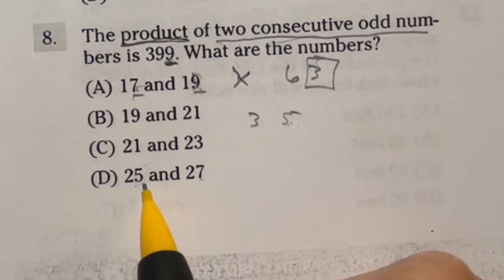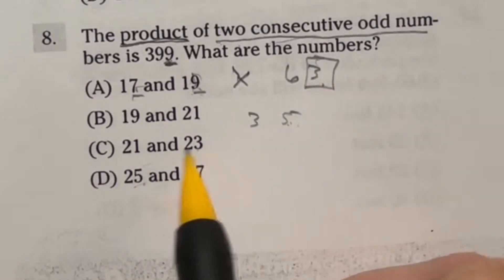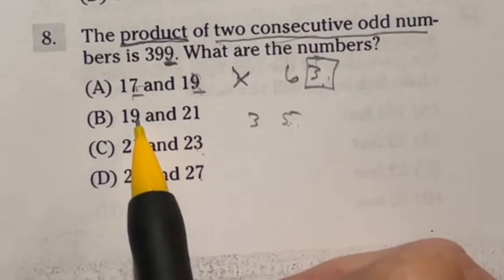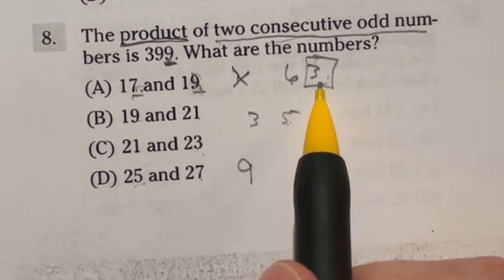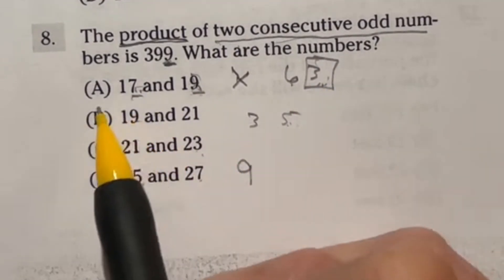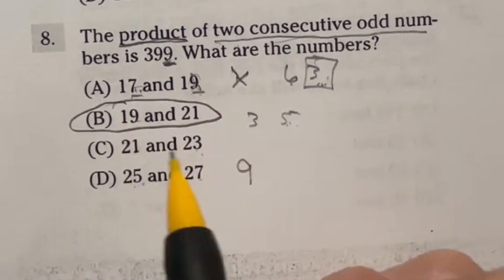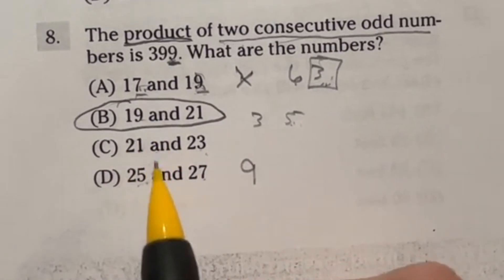Now with this process, you can go through this real fast. Seven times five, that's 35 ending in a five. Three times one ends in a three. One times nine ends in a nine. And nine times seven ends in three. So the only one that ended in a nine is option B.